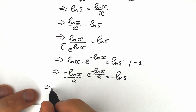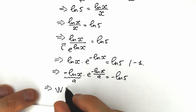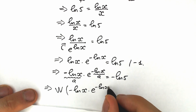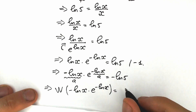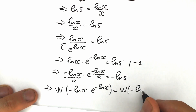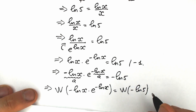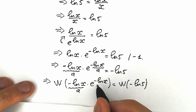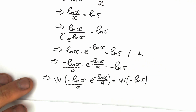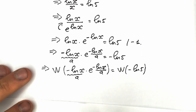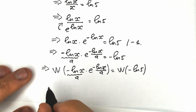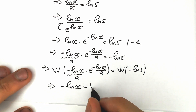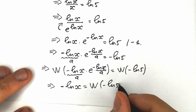Let's apply the Lambert W function to both sides. On the left side, W applied to minus natural log x times e to the power minus natural log x simply gives us minus natural log x — that's our a. So on the left side we have minus natural log x equal to W of minus natural log 5.